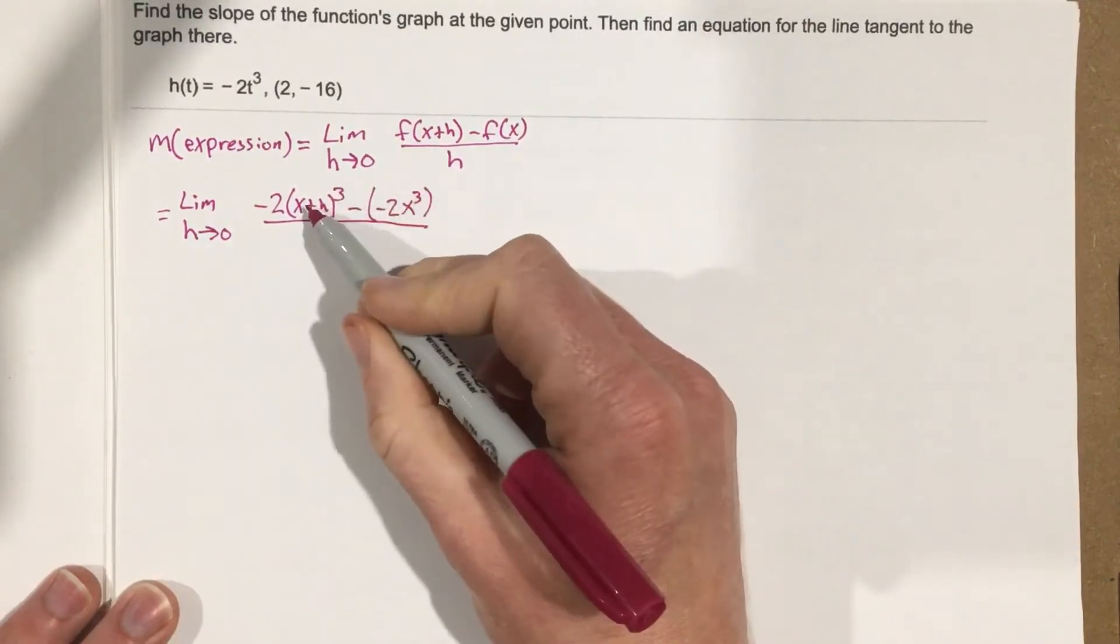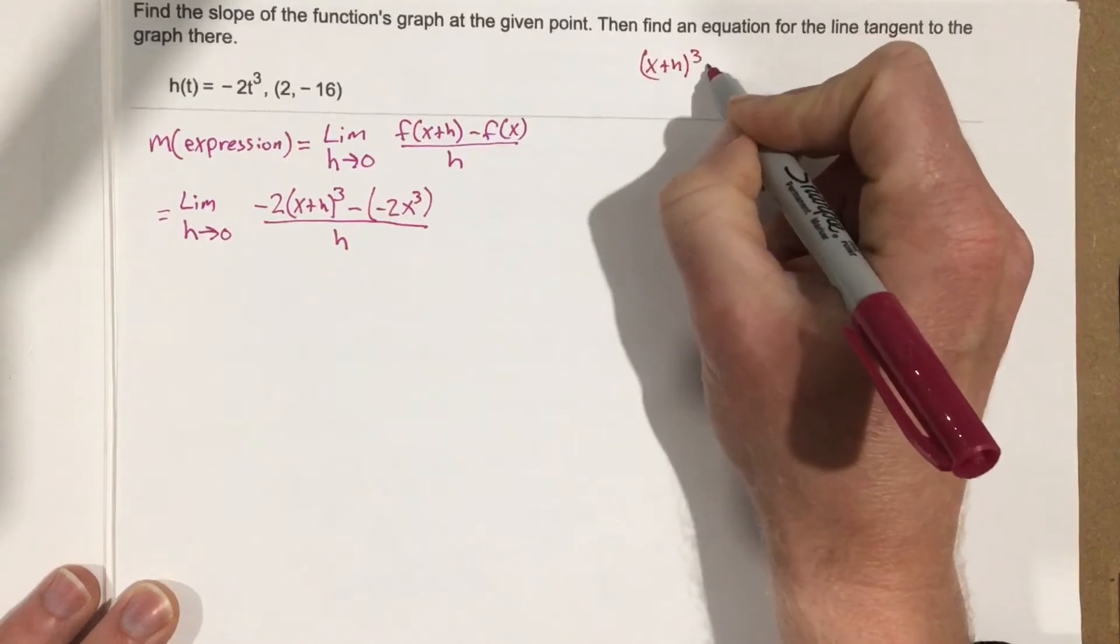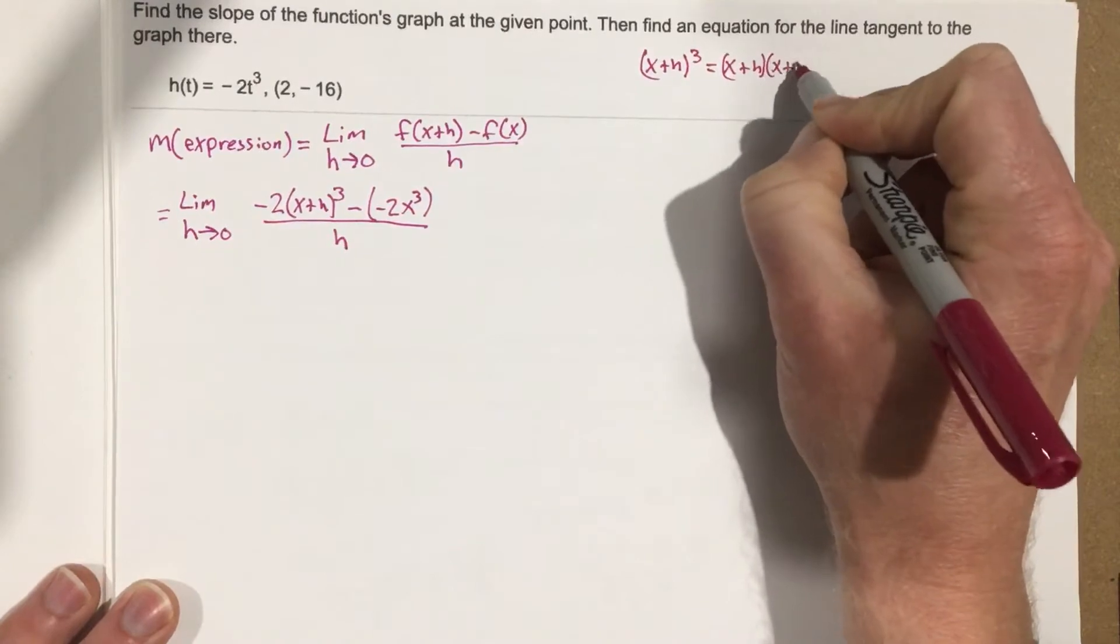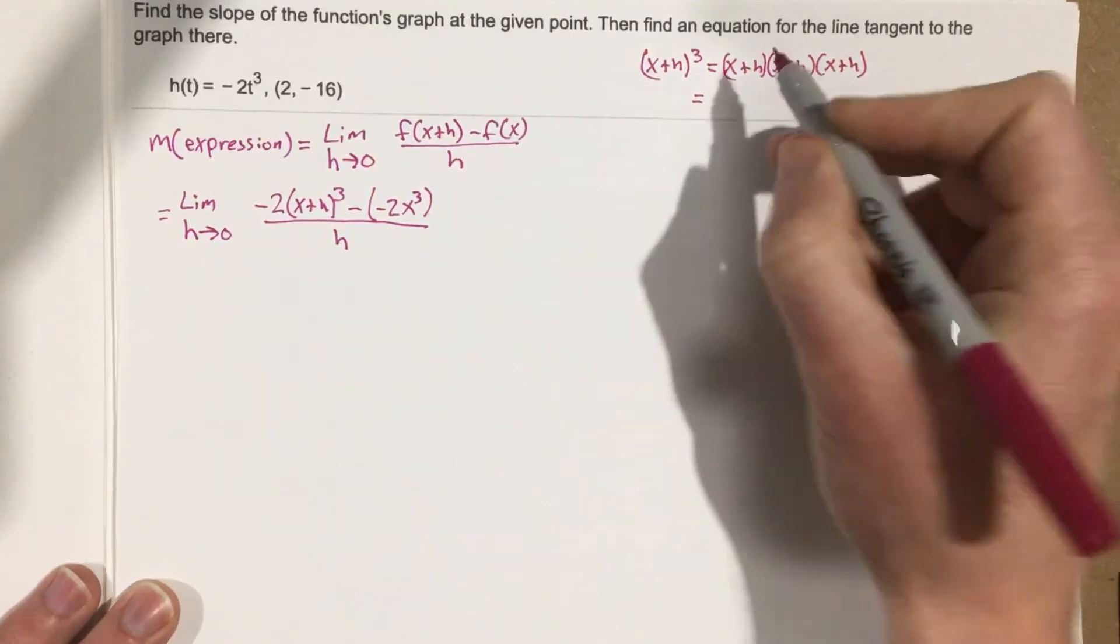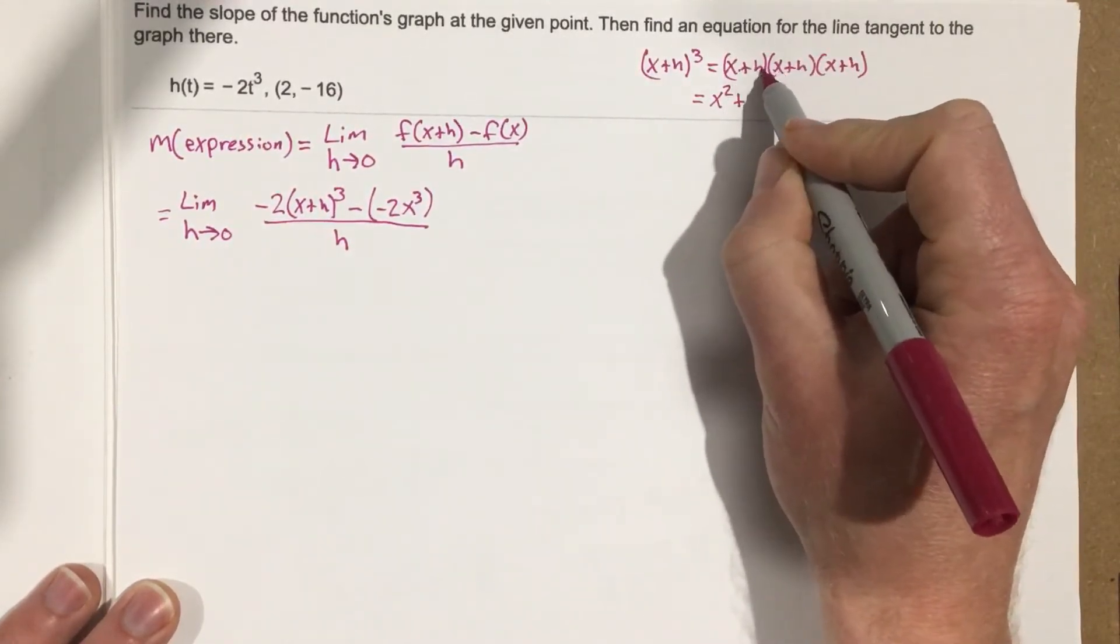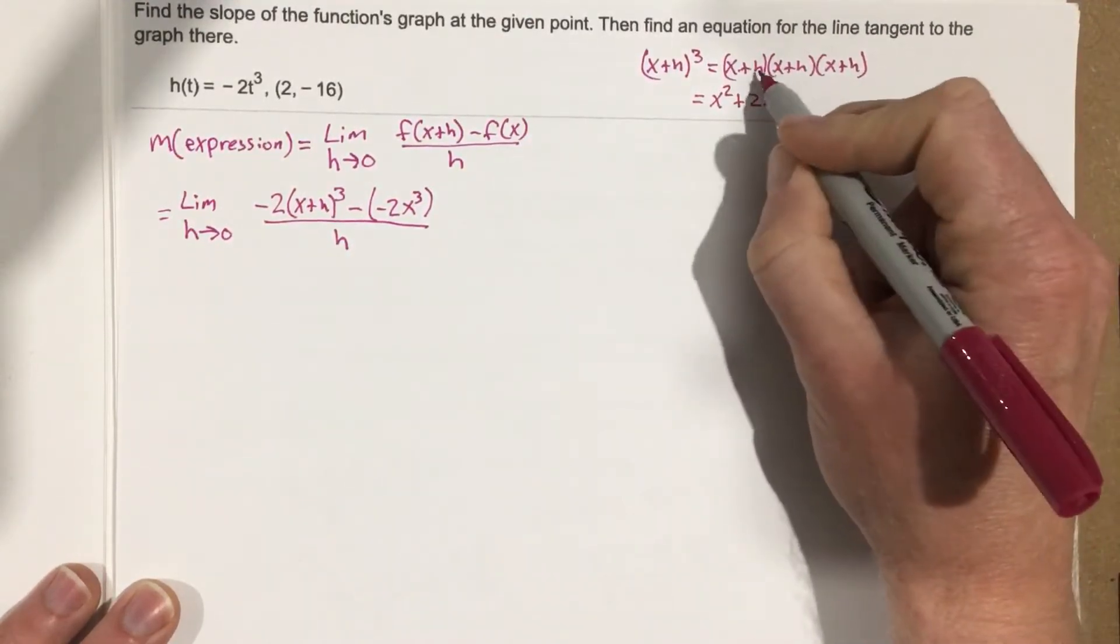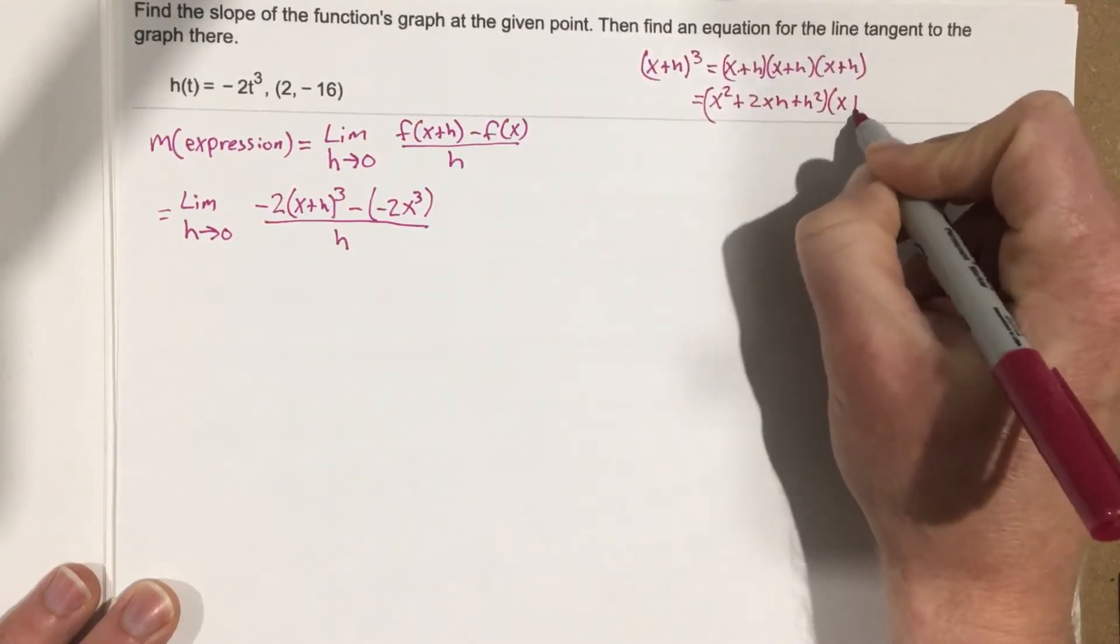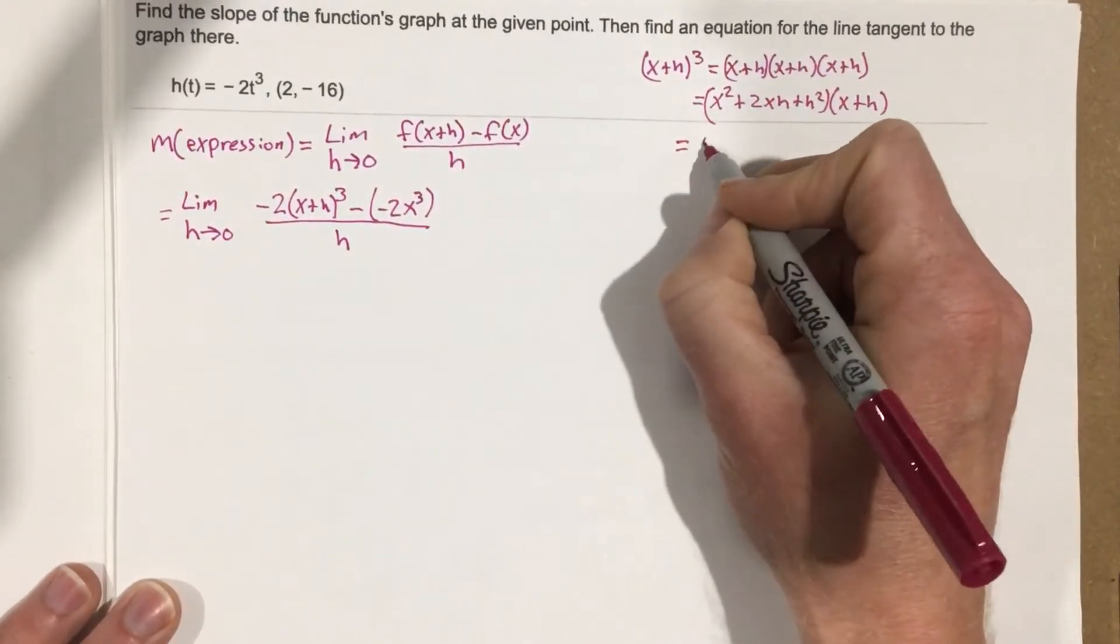The first thing I need to do is figure out what is x plus h cubed. Well, that's x plus h times x plus h times x plus h, which equals x squared plus 2xh plus h squared times x plus h. Now we take x squared times x, that's x cubed, x squared times h, that's plus x squared h.